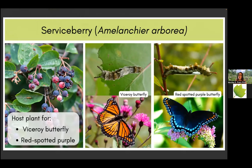The last tree I'd like to mention is the serviceberry. There are two beautiful, very different-looking butterflies to mention. The viceroy butterfly looks very similar to the monarch, but has a black stripe on the hind wing. The other is the red-spotted purple butterfly. Both use serviceberry as a host plant. Although they look very different, they are closely related — you can see that on their caterpillars, which in both cases look like bird droppings, an absolutely great mimicry for hiding from predators. Studies indicate these two species are so closely related that they can actually hybridize.